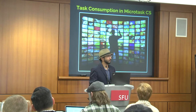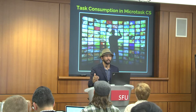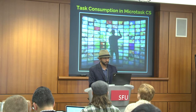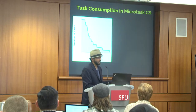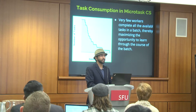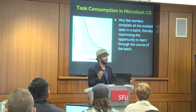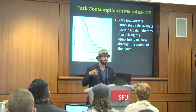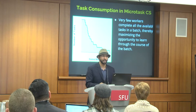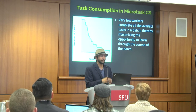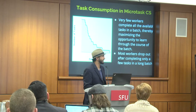Task consumption is very self-selection based. As a worker, I can go onto a site, sign up, get access to a bunch of available tasks, and pick and choose what I want to work on. The result of this is that task consumption looks a bit like a power law, which indicates that very few workers complete all the tasks available in a batch. There are requesters who deploy identical tasks in very large batches — imagine annotating thousands of images. As a worker completing these tasks, you have the opportunity to complete the whole batch, but it can become very monotonous and boring, and fatigue encourages people to drop out. Most workers drop out after completing only a few tasks in a long batch.